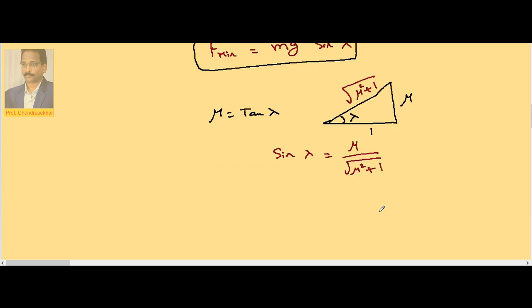So the above equation, F minimum now can be written as, the minimum pulling force required, it is mu Mg by root of mu square plus 1.